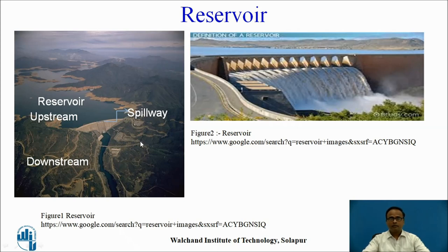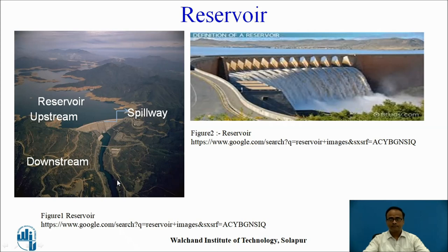This is a photograph of a reservoir. We can see here a large catchment area which is available on the upstream side of this dam, and there is a narrow valley which is provided on the downstream side. There is a spillway provided inside the dam. The purpose of spillway is to expel out the excess water from the upstream side to the downstream side of the dam.